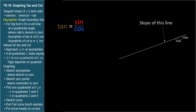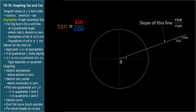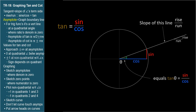The slope of this line is rise over run. This is also equal to the tangent of the angle the line makes with the horizontal axis. Tangent theta equals sine over cosine, which is rise over run. That's just an interesting bonus.